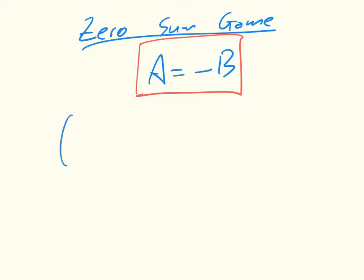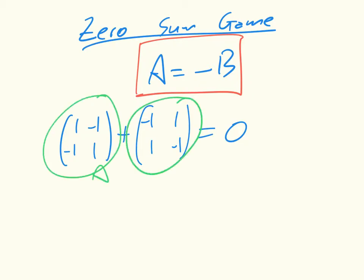So, for example, this game is zero-sum, right? Because this matrix A and this matrix B are equal to the opposite of each other.